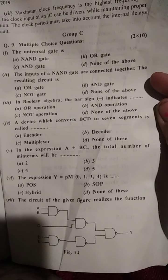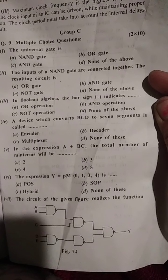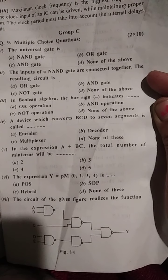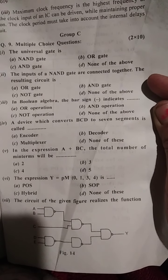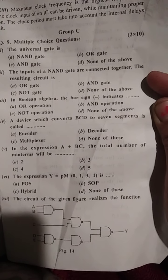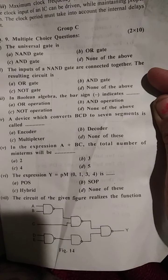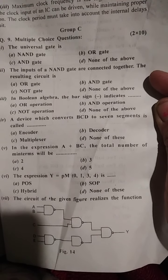A device which converts BCD to seven segment code is called BCD to seven segment converter, a decoder. Fifth question: in the expression A plus BC, the total number of minterms will be...